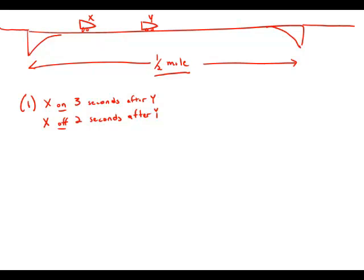Statement number one says car X drove onto the bridge exactly three seconds after car Y drove onto the bridge, and drove off the bridge exactly two seconds after car Y drove off the bridge. So when they entered the bridge, car X was following Y with a lag of three seconds. By the time they got to the end of the bridge, car X was following car Y with a lag of two seconds. That means car X was gaining ground on car Y, and it means that car X spent one second less on the bridge than car Y.